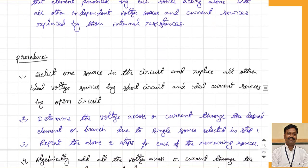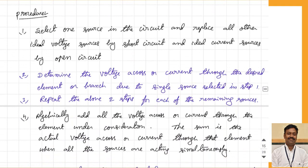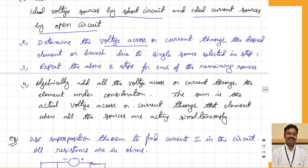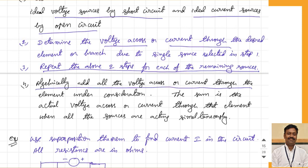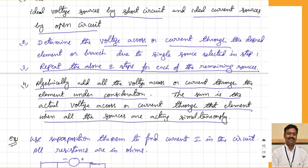The procedure is: first, select one source in the circuit and replace all other ideal voltage sources by short circuit and all ideal current sources by open circuit. Then determine the voltage across or current through the desired element or branch due to the single source selected in step one. Repeat these two steps for each and every source. Finally, algebraically add all the voltages across or currents through the element under consideration — this sum is the actual voltage or current when all sources are acting simultaneously.